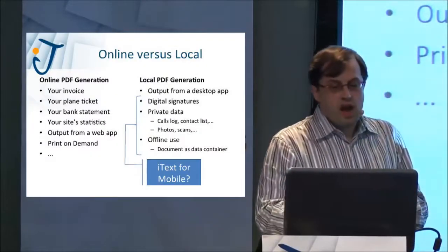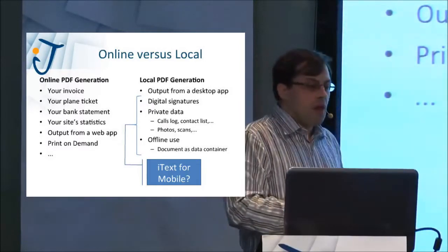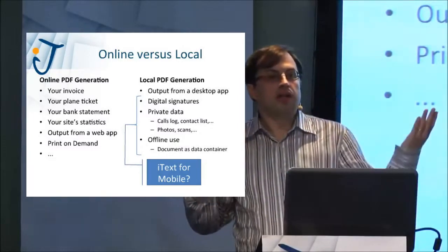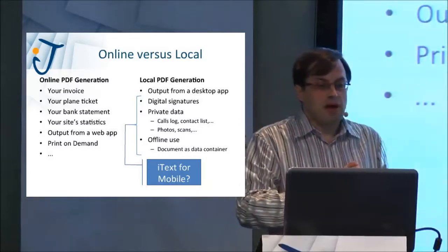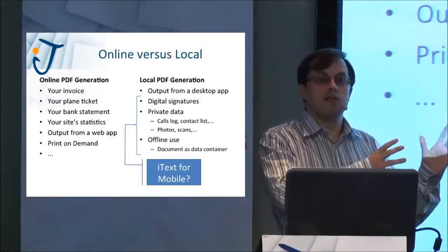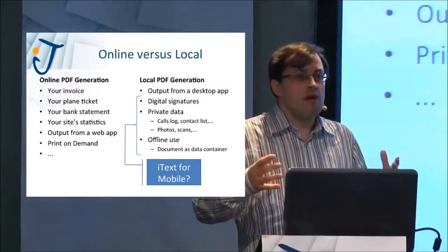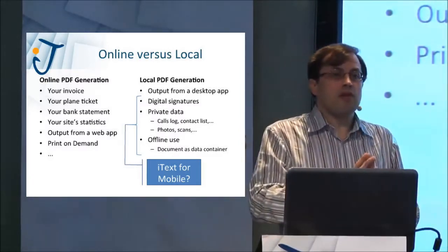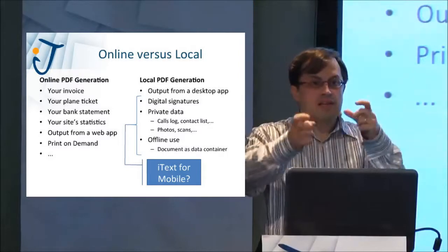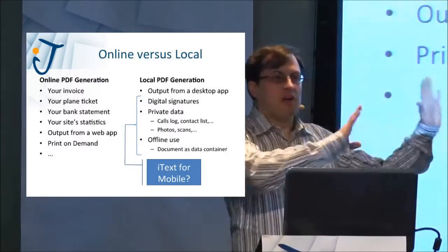Does it make sense to create PDF on a device? Let's look at online versus local PDF generation. Our customers — we've already talked about invoices. You buy something in a web store and you get an invoice in PDF created by iText. Or we fly to the States using KLM, we register, we get a boarding pass — iText is used to create the boarding pass. Bank statements, site statistics, output from a web app. For instance, Faber and Faber, a publisher of books, has books that are out of print. You can order one, and using iText they create a nice PDF and print the book on demand.